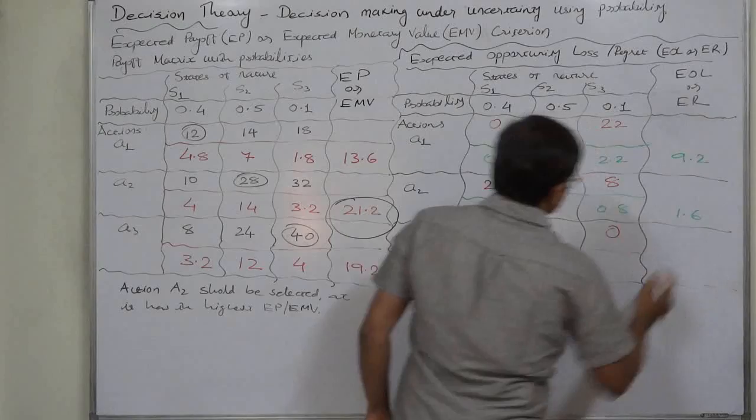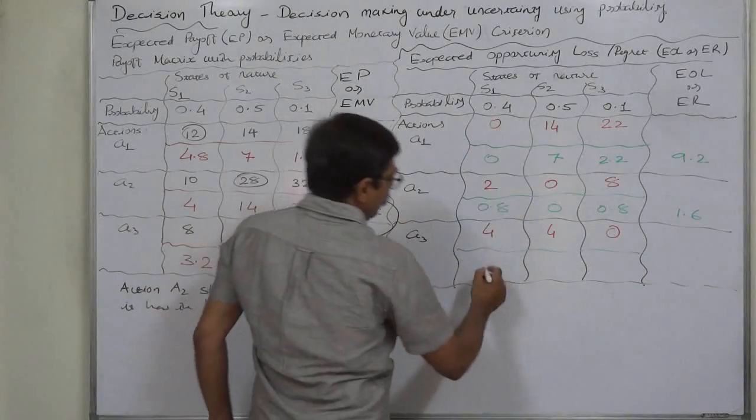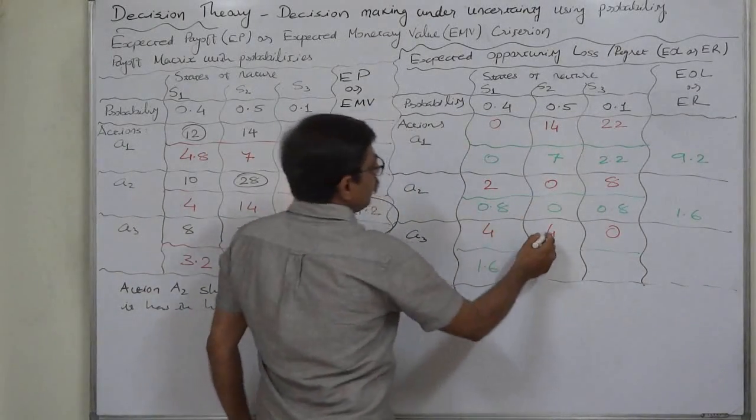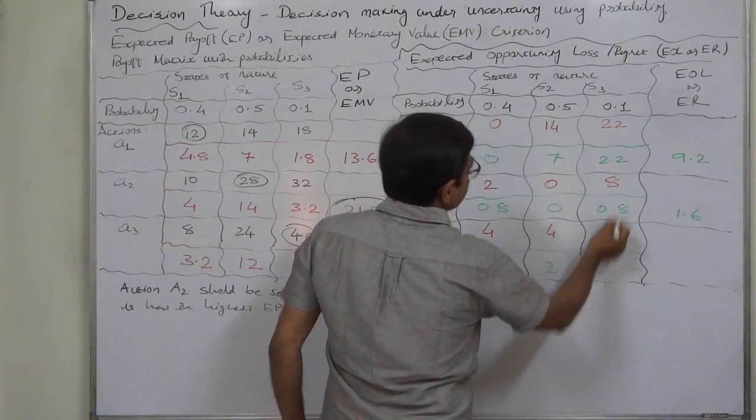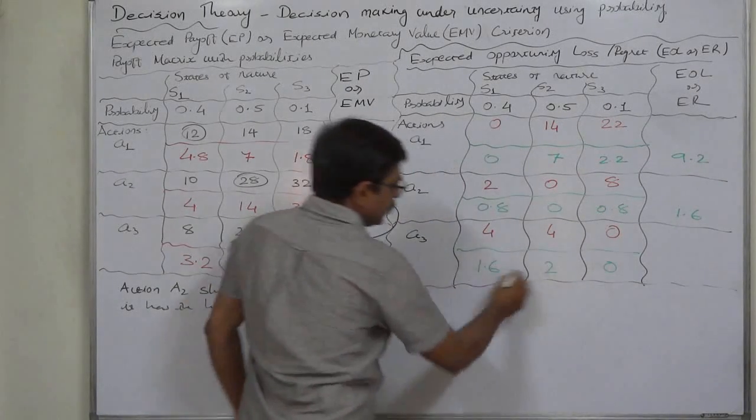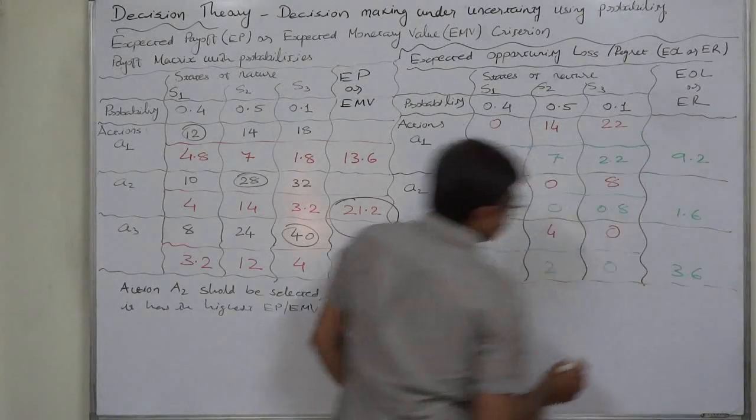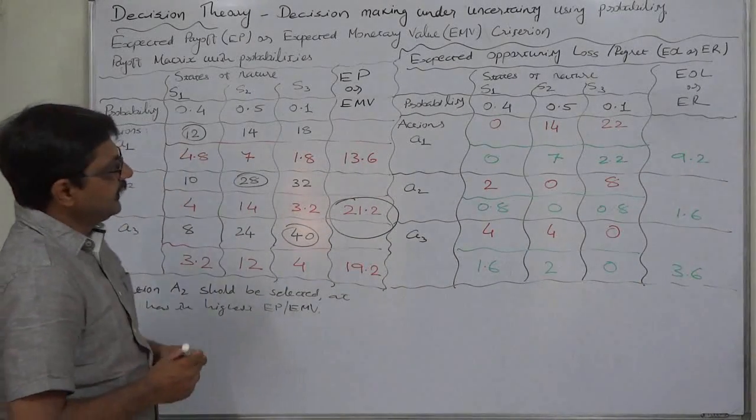4 into 0.4 is 1.6; 4 into 0.5 is 2; and 0 into 0.10 is 0. The total comes to 3.6.